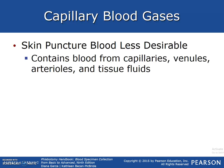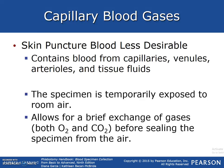Skin puncture blood is less desirable because it contains blood from capillaries, venules, arterioles, and tissue fluids. The specimen is temporarily exposed to room air, allowing a brief exchange of gases — both CO2 and O2 — before sealing the specimen from the air. This makes it less desirable, especially for blood gases, and it is an open collection system.